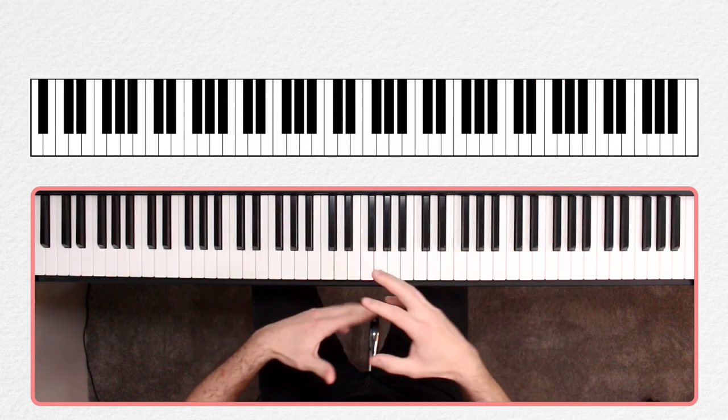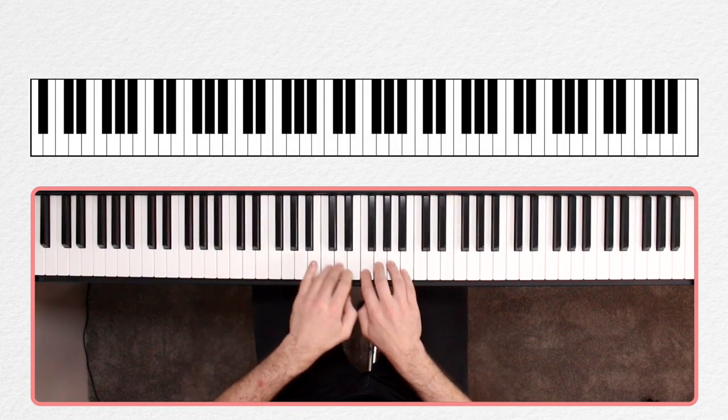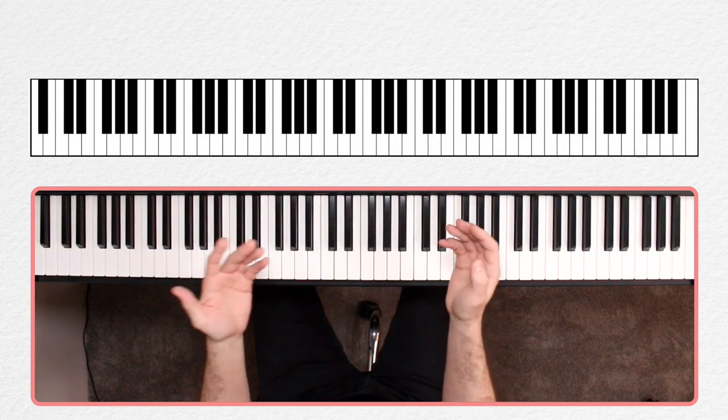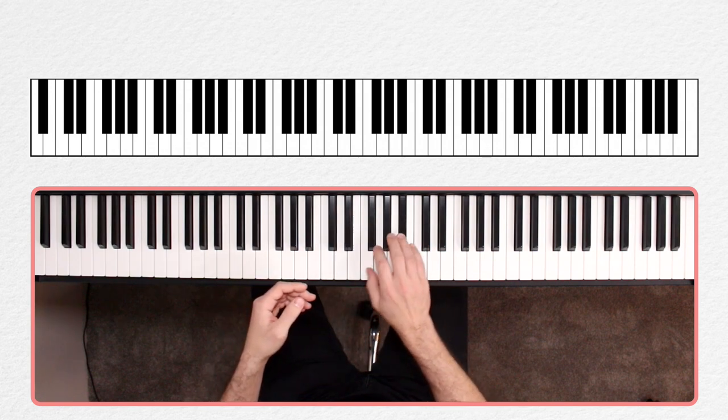You can also think of all of these smaller groups put together as one big group of one, two, three, four, five, six, seven, eight, nine, ten, eleven, twelve.